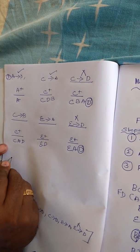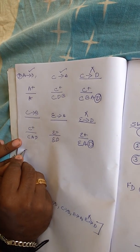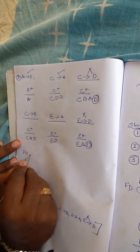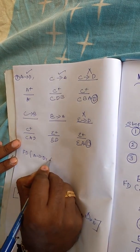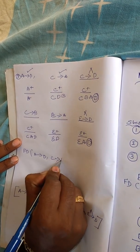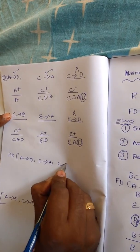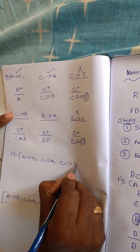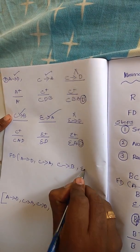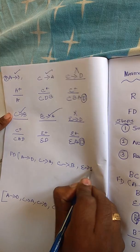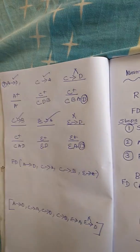So the final minimal cover will be: A determines D, C determines A, C determines B, and E determines A. This is the final answer. Thank you.